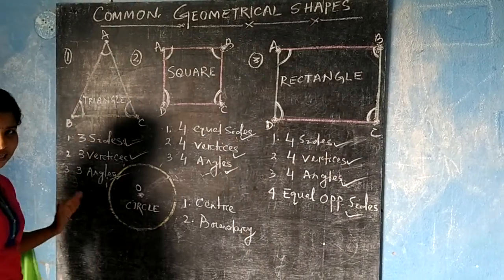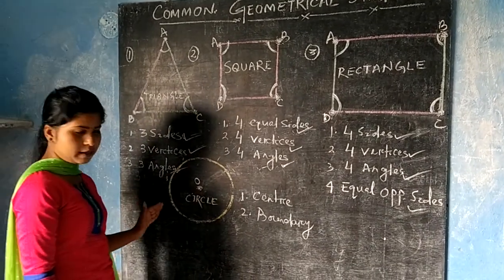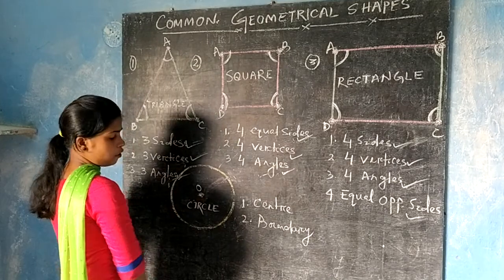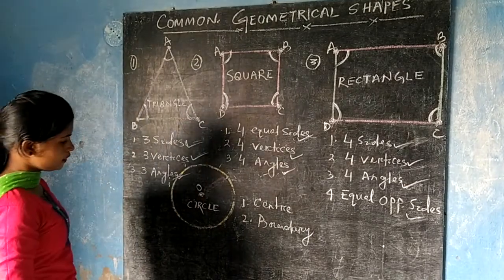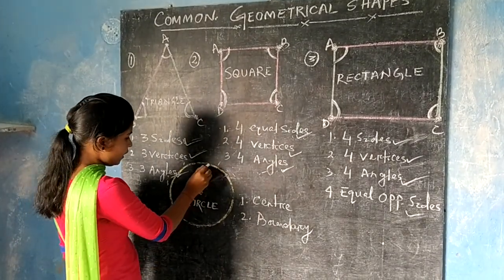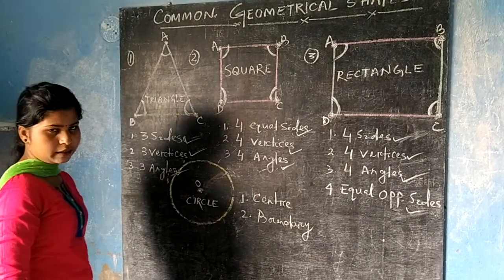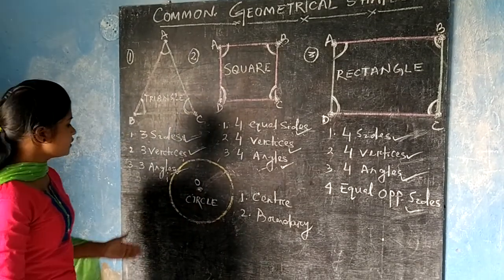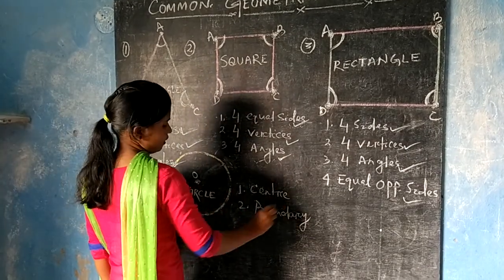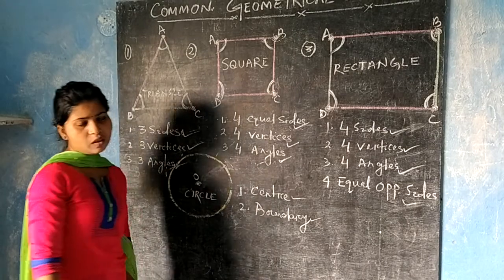Look at the last figure. It is a geometrical shape. It has a middle region — that point is called the center. And the yellow border is called the boundary. So it is called a circle. It has one center and one boundary.